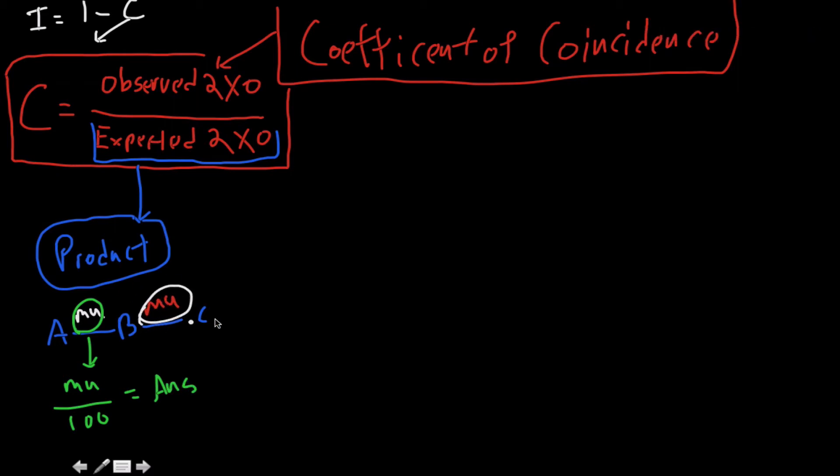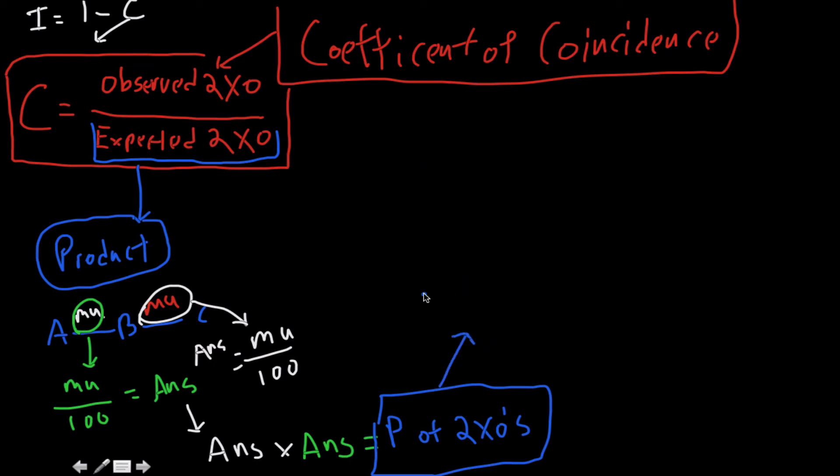You're going to take this one here as well, and you're going to divide those map units by 100, and you're going to get an answer from that answer there. So what we do is, I'm just going to write this down here, you take our answer from this, and you're going to multiply that by your answer from that. And when you multiply these two together, this is going to give you the probability or the likelihood of double crossovers.